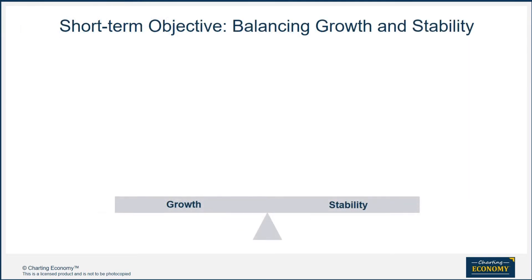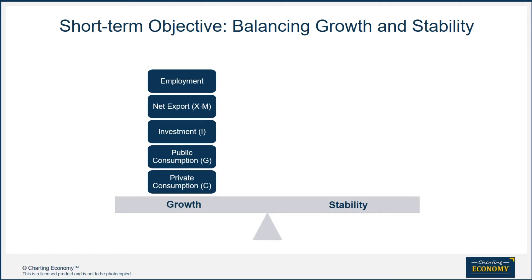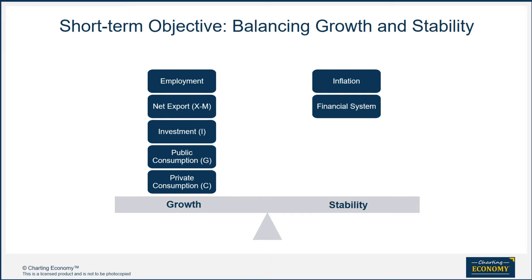The short-term objective of economic policymakers is to balance growth and stability. They can stimulate growth through these four engines on the expenditure side: private consumption, public consumption, investment, and net export. Increasing employment is usually the immediate target for short-term growth stimulus policies. On the other side, policymakers have to watch out for inflation and other macroeconomic stability issues, such as the financial system's health, fiscal health, balance of payment, and the exchange rate.